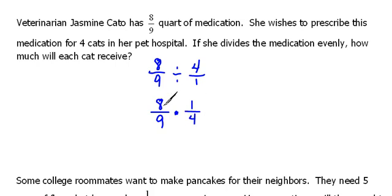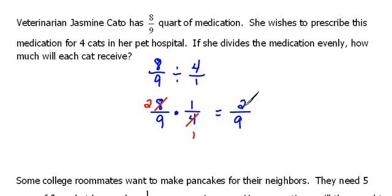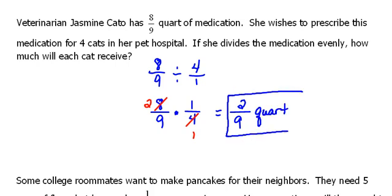Now we can start in with our multiplication. Four goes into four one time, and four goes into eight two times. So two times one would be two, and nine times one would be nine. This tells us that she's going to give each cat two-ninths quart of medication — that would be evenly divided.